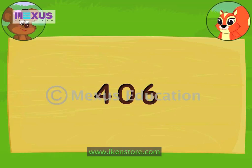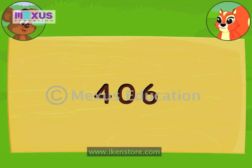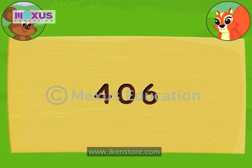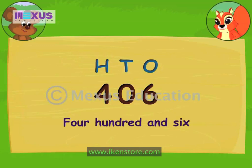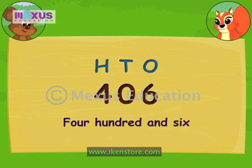Sometimes the number in one of the place values is a 0. Let's see how you read them. Consider this number. The number in the hundreds place is 4. The digit in the tens place is 0. And the ones digit is 6. It is read as 406. Since the last two digits are read together, 0 and 6 together is only 6.